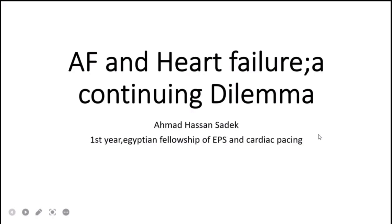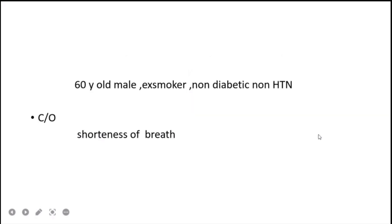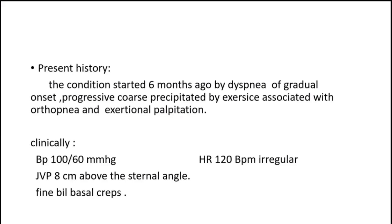Atrial fibrillation and heart failure are a continuing dilemma. Our patient is a 60-year-old male, a smoker, non-diabetic, non-hypertensive, presenting with shortness of breath. The condition started six months ago with progressive dyspnea of gradual onset, precipitated by exercise, and associated with orthopnea and exertional palpitations.